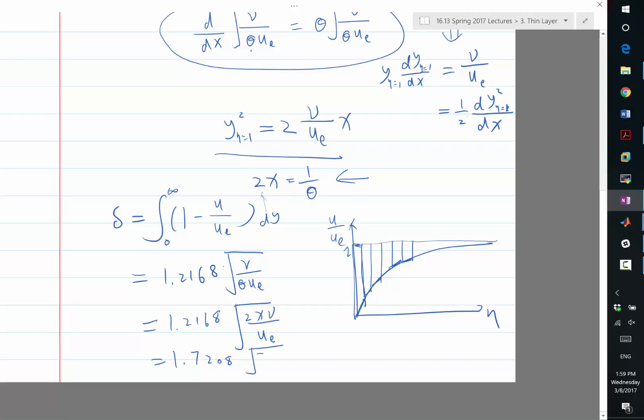So 1.7208. So it's actually square root of x nu ue, which is 1.7208 times x, and then it's nu divided by ue x. So this is basically 1 over square root of Rex. That's the formula you usually see in literature.